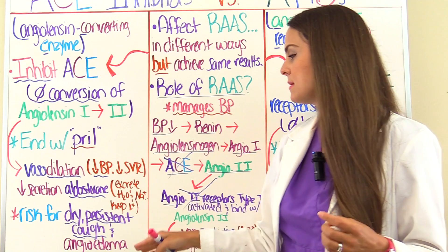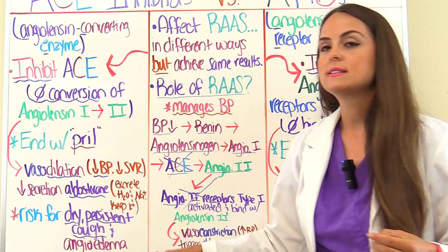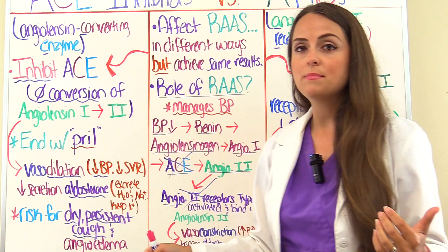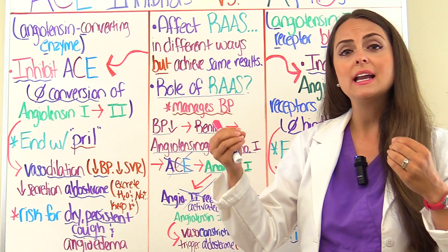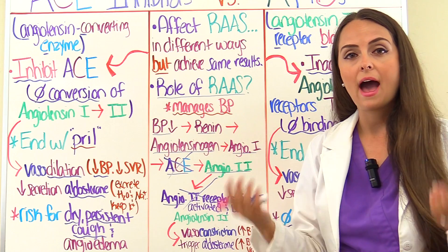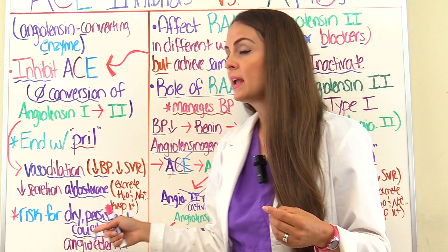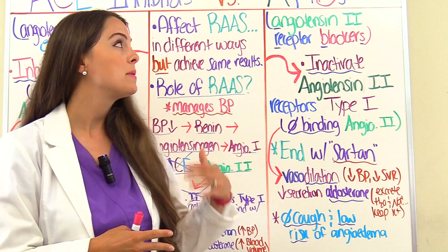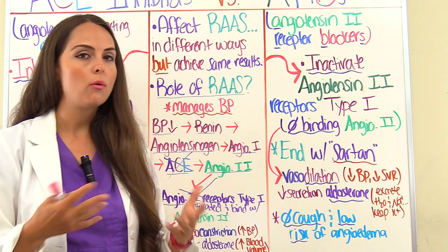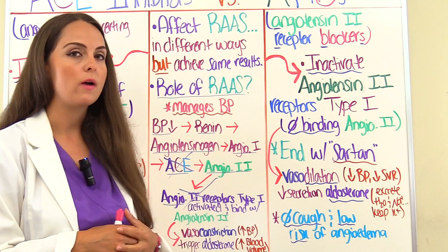Another thing with ACE inhibitors to watch out for as the nurse is something called angioedema. This is where you have swelling of the deep tissues, and it can present as swelling of the face, the tongue, the lips, and it can cause difficulty breathing — and if that happens, that's a medical emergency. It's less likely to happen with an ARB, so there's a low chance of it happening, but you always want to monitor for that as well.